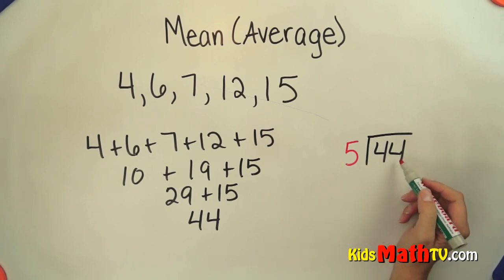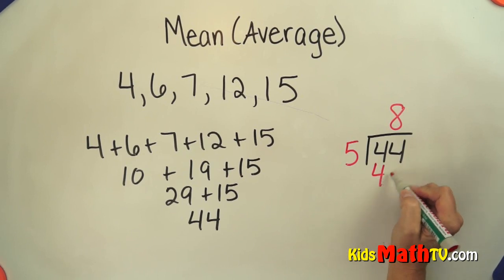How many 5's in 44? There are 8, 8 times 5 is 40, subtract, and I get 4.